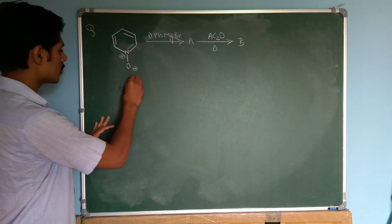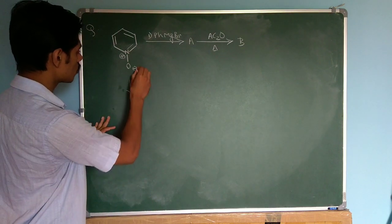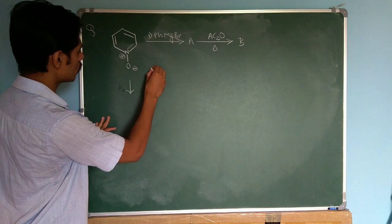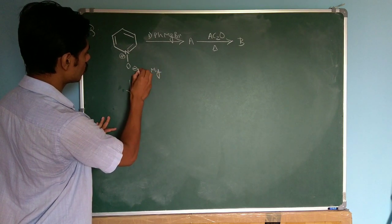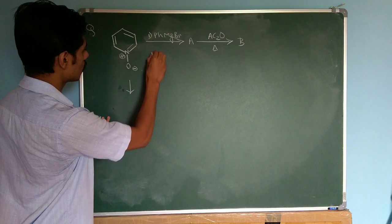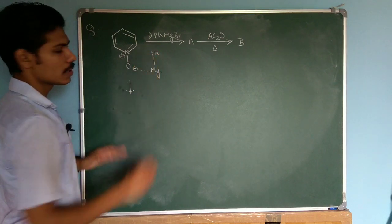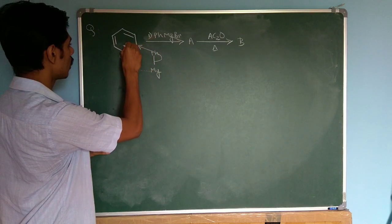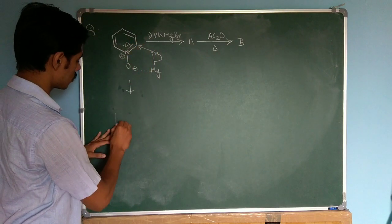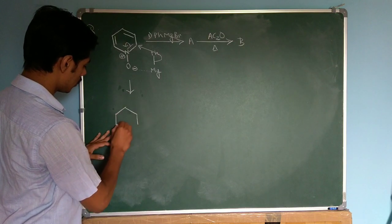So the first step is a bit straightforward. This oxygen O minus will coordinate with magnesium. So here you have magnesium, it will coordinate with this magnesium, and here you have this phenyl ring. So now this will attack over here in a typical Grignard reaction fashion.